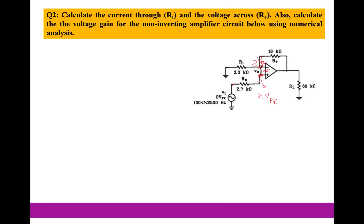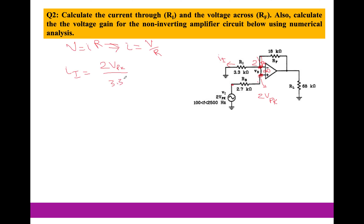Now, from circuit analysis, you have 2 volts at one node and ground at the other end. I can use Ohm's law: V = I × R, so the current equals voltage divided by resistance. I'll name this current I_input. So I_input equals 2 volts divided by 3.3 kΩ, which gives us 606.1 microamperes peak.